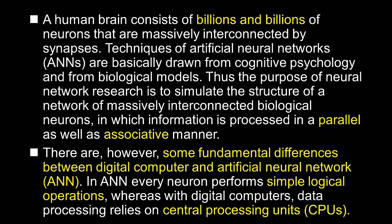A human brain consists of millions and billions of neurons that are massively interconnected by synapses. Techniques of artificial neural networks are basically drawn from cognitive psychology and from biological models. Thus, the purpose of neural network research is to simulate the structure of a network of massively interconnected biological neurons, in which information is processed in a parallel as well as associative manner.